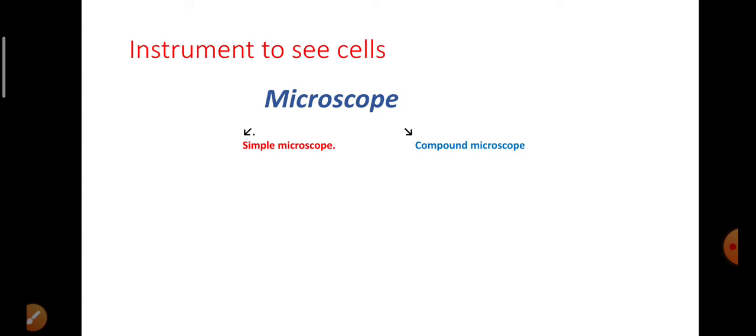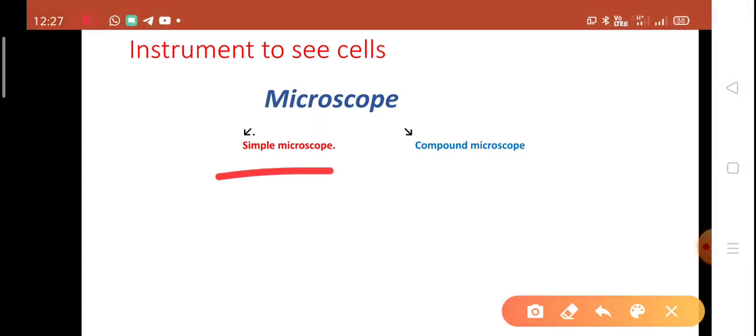Instrument to see cells is the microscope. There are two types of microscope: simple microscope and compound microscope. We can see cells with the help of compound microscope, not simple microscope. With simple microscope, we can see small things, but very small structures may not be seen clearly. Therefore, a compound microscope is used for seeing cells.